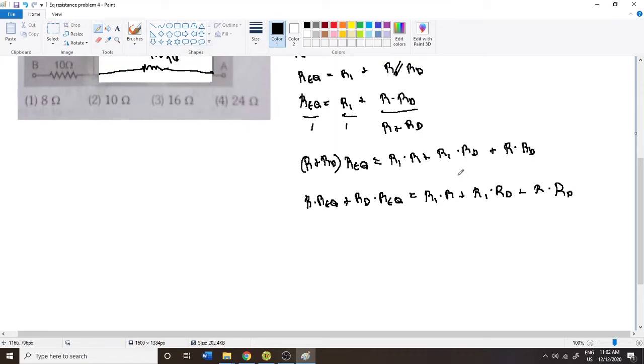Now I'm going to expand my canvas just a little bit here because I'm going to have to show every single step. So, R dot REQ plus RD times REQ is equal to R1 dot R plus R1 dot RD plus R dot RD. Now we're going to collect all of these R terms. Here's one, here's one, and here's one. We're going to move all of them to the left side. So it's going to be R dot REQ minus R dot R1, I'm just going to flip these so it's easier, minus R dot RD. And I'm going to move this one over to that side, so it's going to be R1 dot RD minus RD dot REQ.